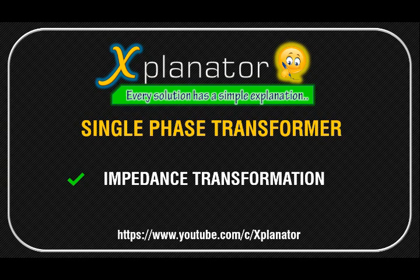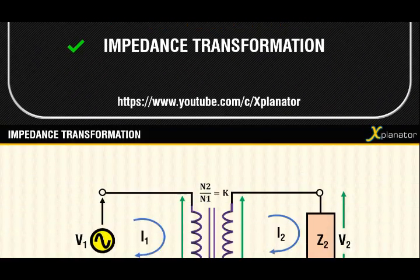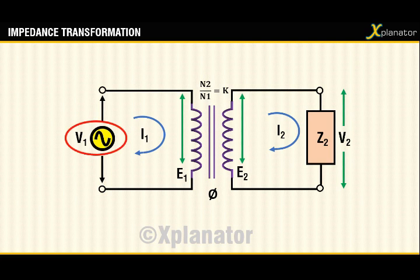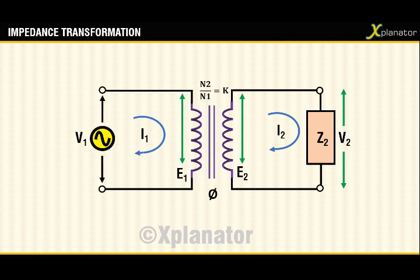Hello guys and welcome to Explanator. Today's video is about impedance transformation in a single-phase transformer — why do you need one and what are the steps for the transformation. Consider an ideal transformer connected to an inductive load. Let the turns ratio between secondary and primary, that is n2 and n1, be given as k. The voltage applied is v1, the output voltage drop is v2, the current flowing in the primary winding is i1, and that in the secondary winding is i2.